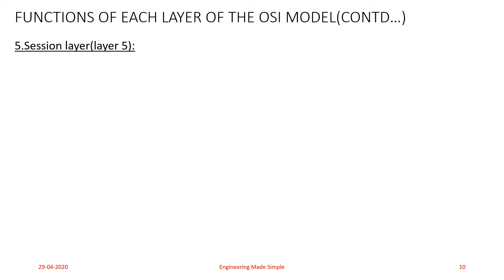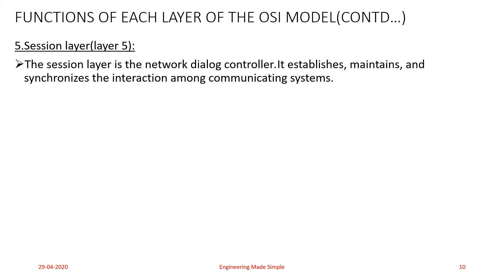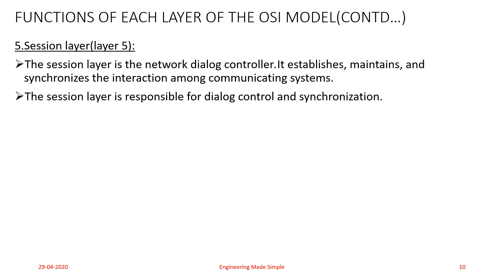Now let us study the functions of the Session layer. The Session layer is the network dialogue controller — dialogue meaning the communication between the two different communication systems. It establishes, maintains, and synchronizes the interaction among communication systems. The Session layer is also responsible for dialogue control and synchronization.